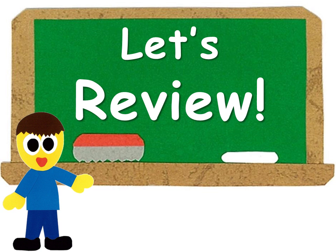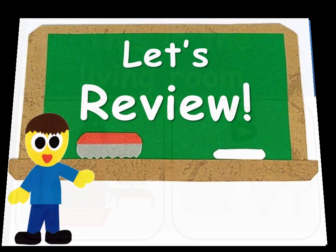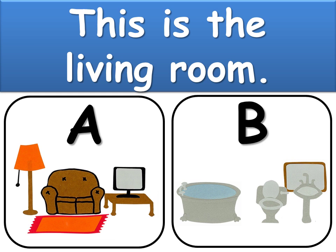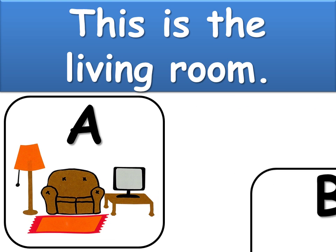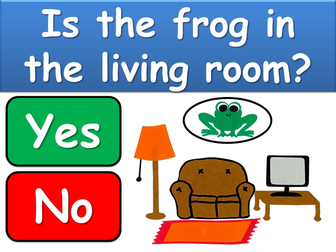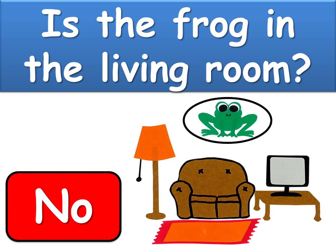Now let's review the story. This is the living room. Which picture shows us the living room — is it A or B? The answer is A. A is the living room. Is the frog in the living room? The answer is no — the frog isn't in the living room.